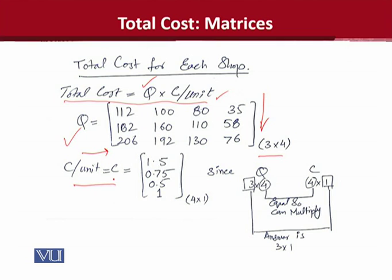After that, the per unit cost we have extracted from the previous tables. And the cost of individual varieties per unit, we have noted it in the fashion of a matrix. And the order of this is 4 into 1.